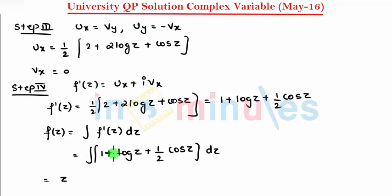Integration of log z, so we need to apply integration by parts. When we say integration of log x dx, that is integration of 1 times log x dx. This is my u, this is my v, so we say log x times integration of 1 as x minus differentiation of log x is 1 by x times integration of 1 as x with respect to dx.